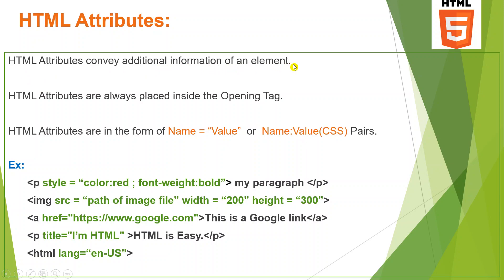These attributes are placed inside the opening tag. We will see one example so you will understand it very well. HTML attributes are in the form of name and value pairs. Basic HTML attributes are written like this: name="value". CSS name-value pairs are written like: name: value.